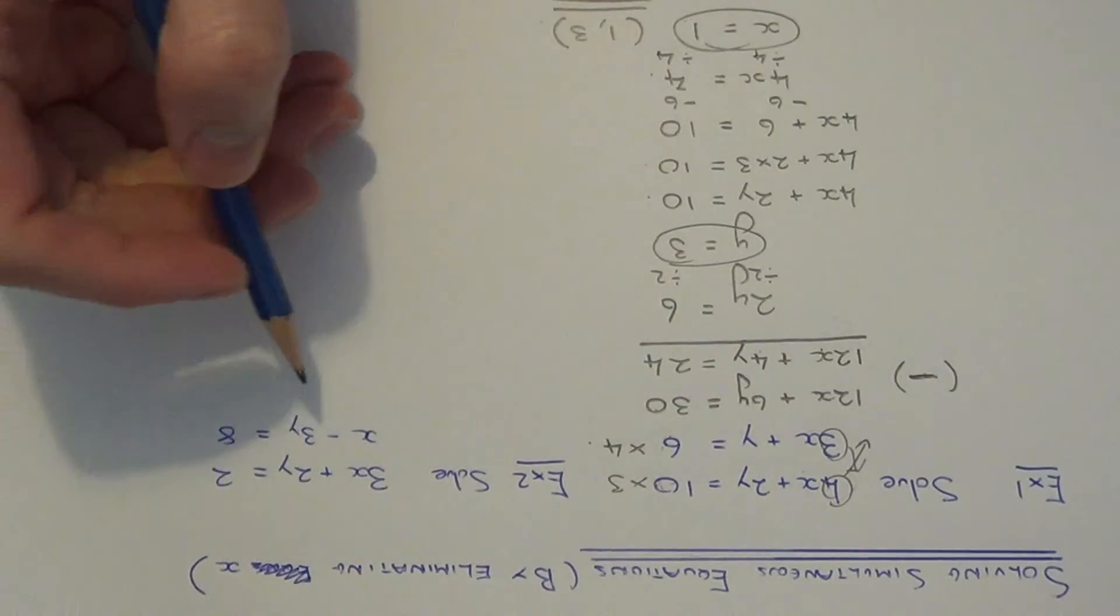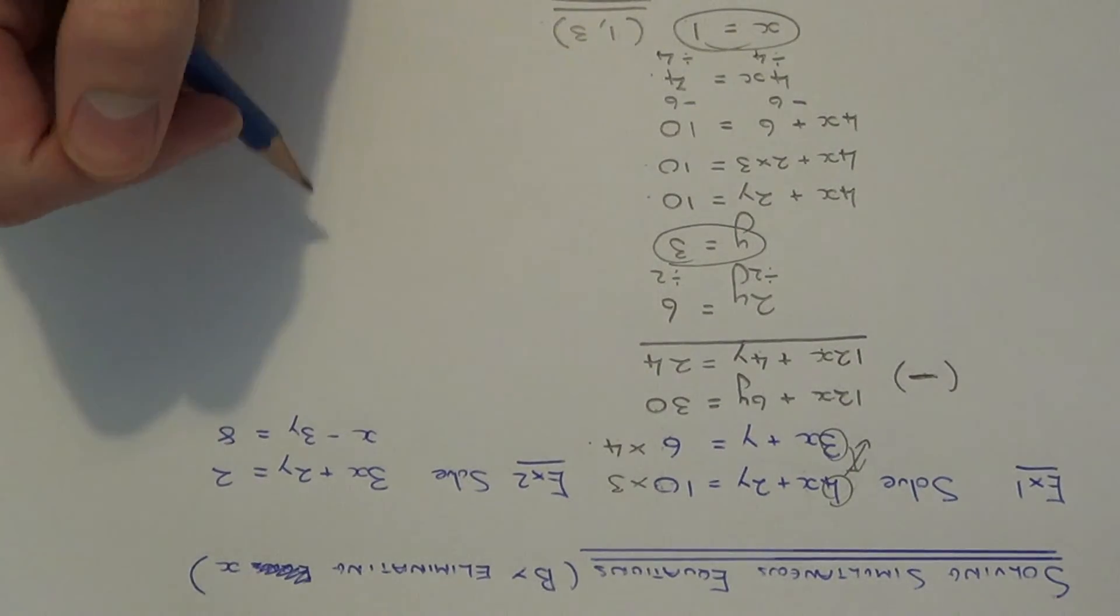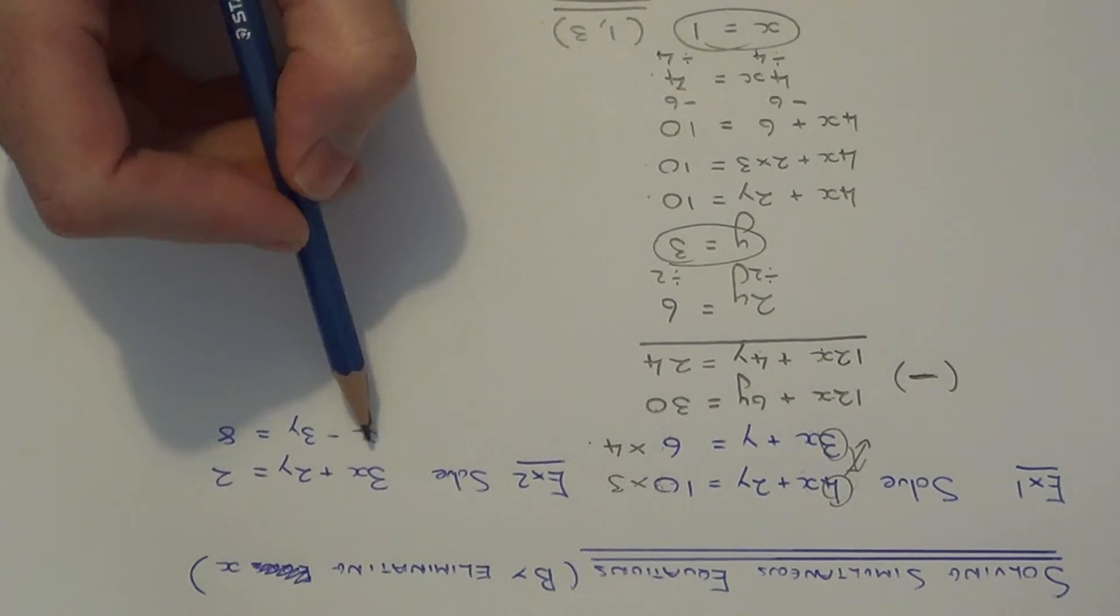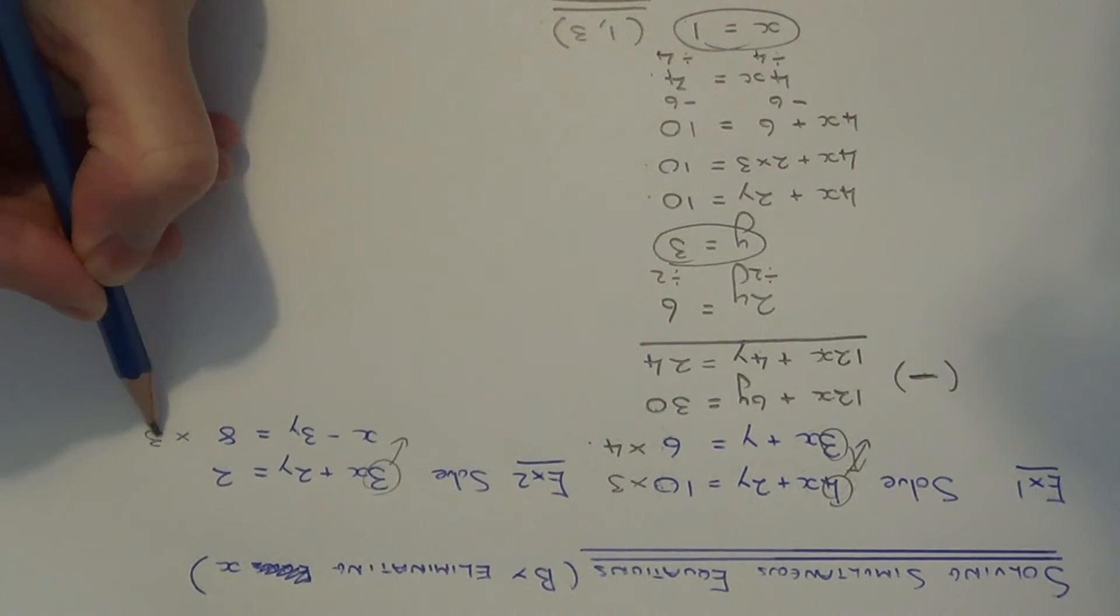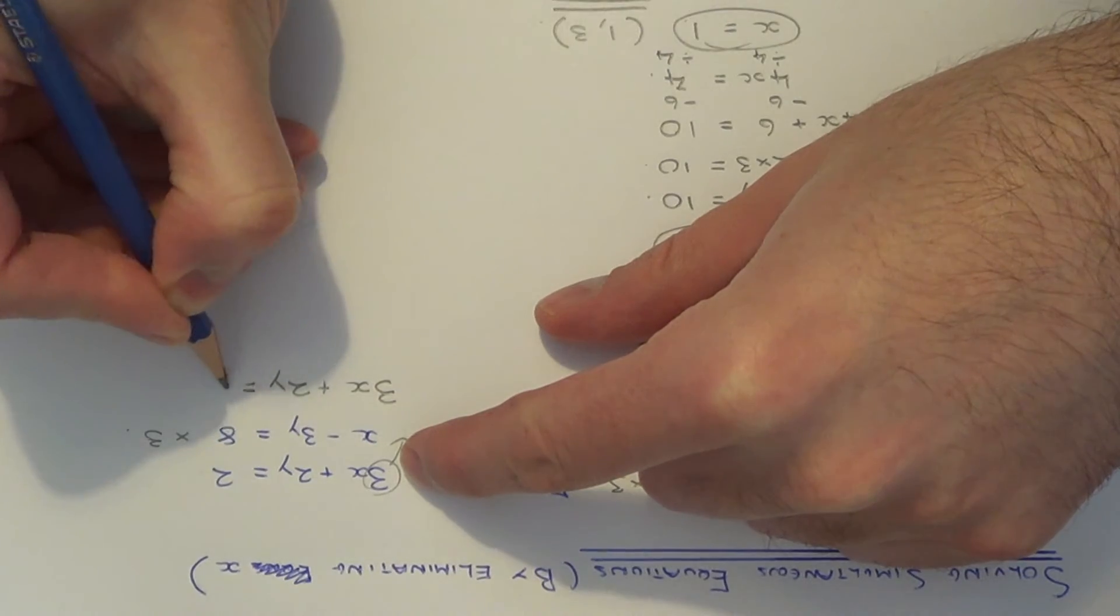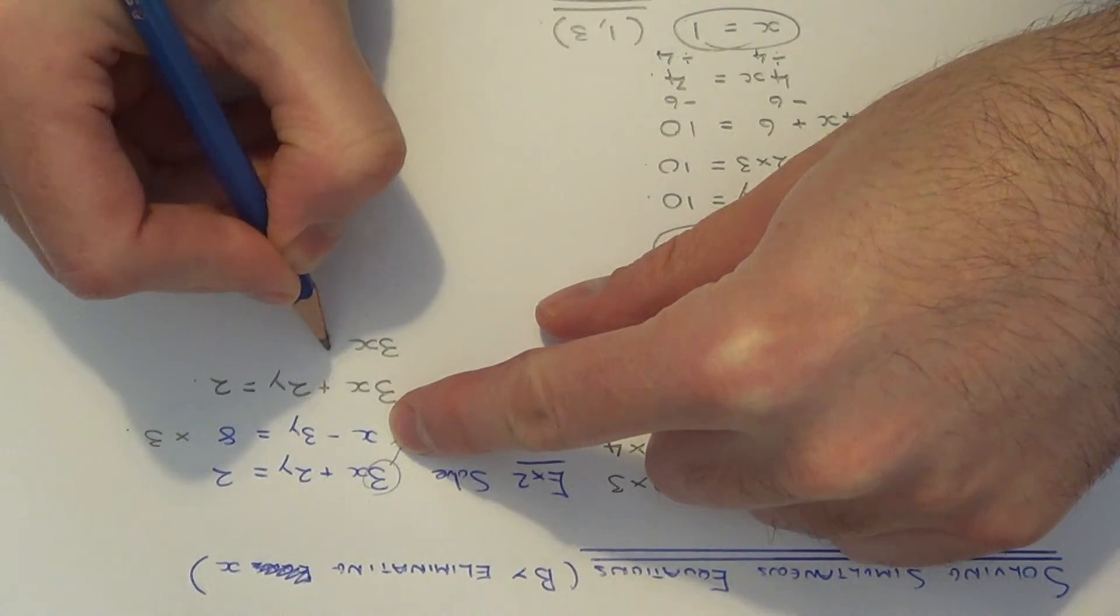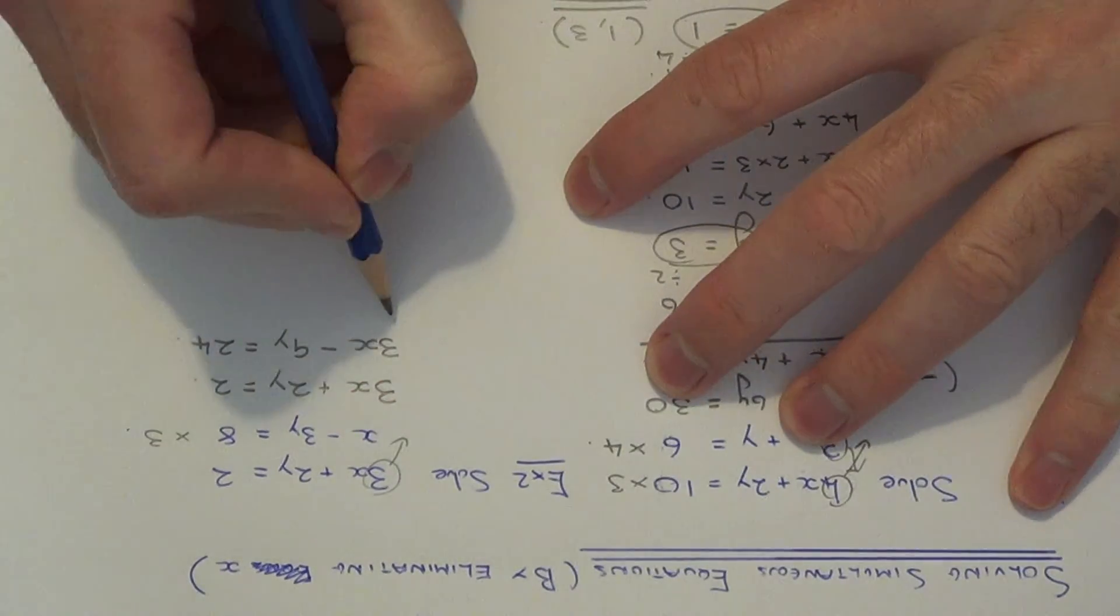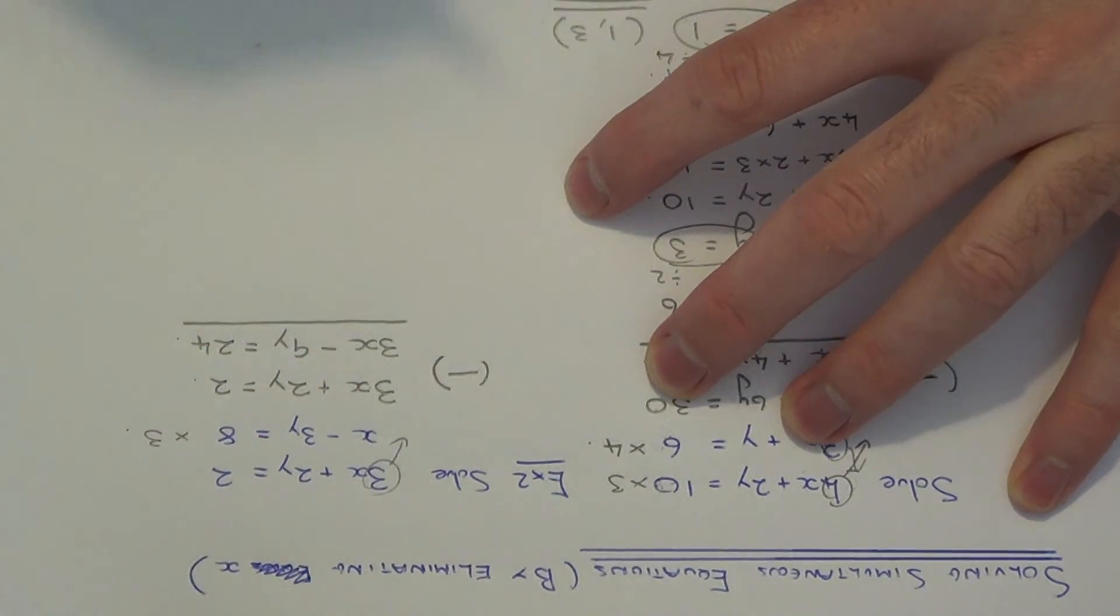So let's move on to example 2. This one's a little bit trickier because we have some negative values here. So again, we need to make the numbers before x the same. In this example here, we only have to multiply one of the equations. So we just need to multiply the second equation by 3. So if I just copy out the first equation one more time, and let's multiply the second equation by 3. So that would give me 3x minus 9y equals 24.